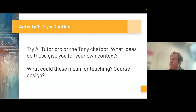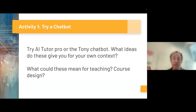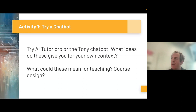What I'd like you to do now is go to the worksheet and look at Activity One: 'Try a Chatbot.' I've put a link to the Tony Bates chatbot — ask it anything about online learning, and you might even ask some personal information about Tony to see what happens. Also try the AI Tutor chatbot. I'm going to give you about four minutes to try those, and then I'd like folks to share what this could mean for teaching and course design.